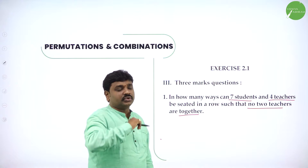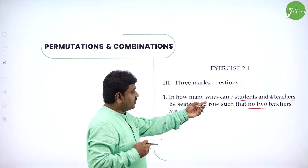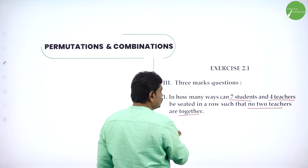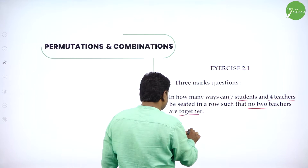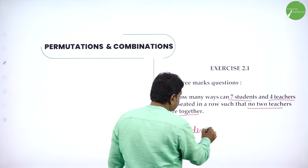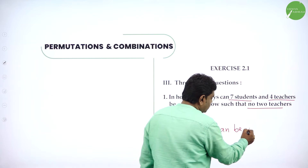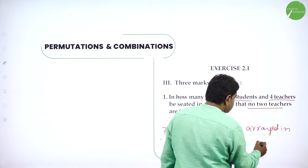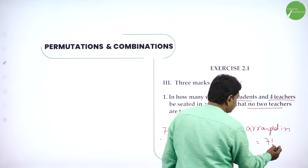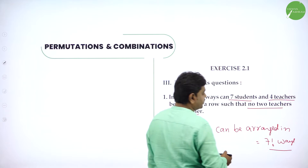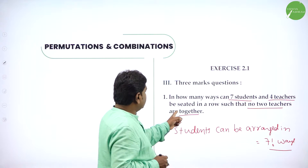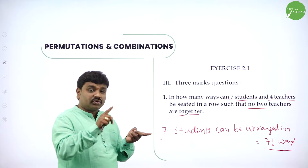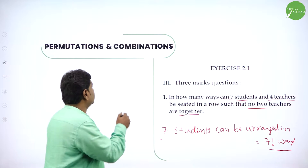So, no 2 teachers are together. They have not given restriction for students. 7 students are there — 7 students get no restriction. So 7 students can be arranged in 7 factorial ways because there is no restriction. And teachers should not sit together, meaning they should come between students.